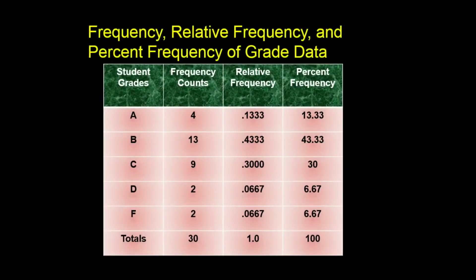Here is a table that shows the frequency, the relative frequency, and the percentage frequency distributions for the 30 students. We can see the five categories of grades listed, with three columns of numbers: frequency counts, relative frequencies, and percent frequencies of each grade category. Notice how the table has a title and each column has a header — Grades, Frequency, Relative Frequency, and Percent Frequency. It is important that the frequency column adds up to the sample size of 30, the relative frequency column adds up to 1, and the percent frequency column adds up to 100%.